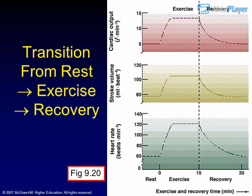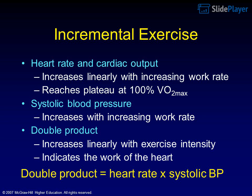Incremental exercise and the double product: heart rate and cardiac output increase linearly with increasing work rate, reaching a plateau at 100% VO2 max. Systolic blood pressure also increases with increasing work rate. The double product (heart rate × systolic BP) increases linearly with exercise intensity and indicates the work of the heart.